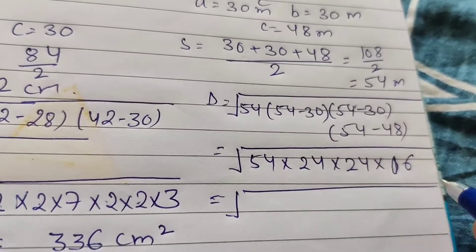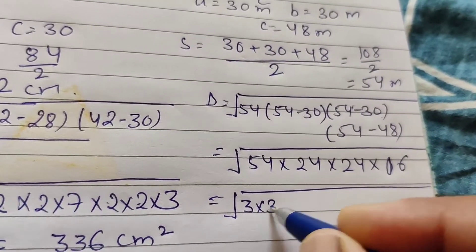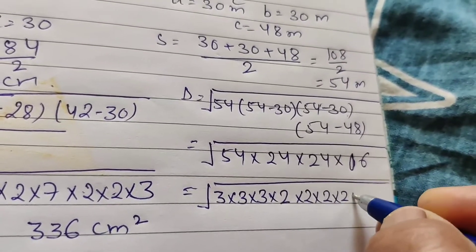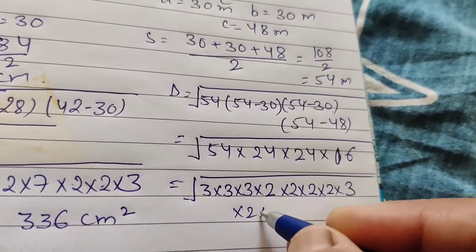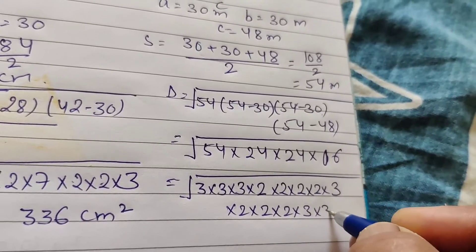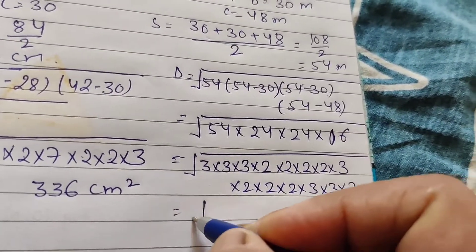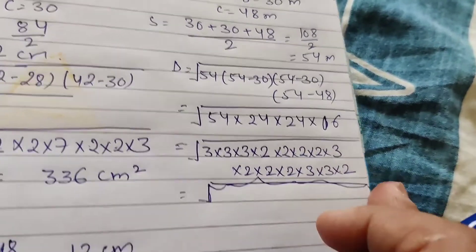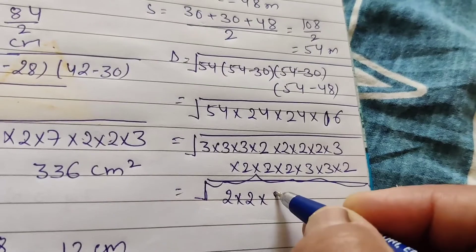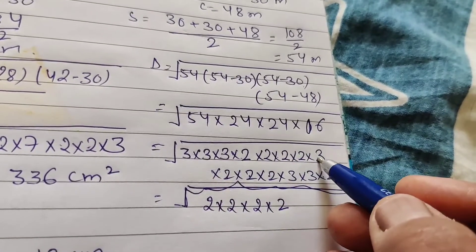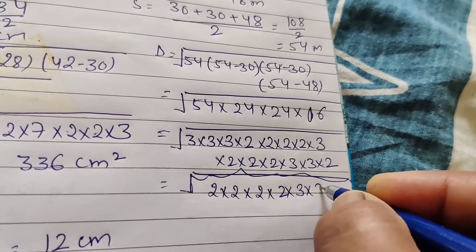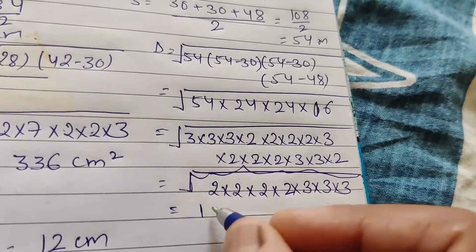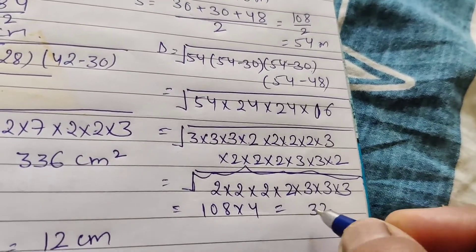After prime factorization of 54 (2×3³), 24 (2³×3), 24 (2³×3), and 6 (2×3), and pairing all factors, we get 108 into 4, which equals 432 meter square as the area of triangle ABD.